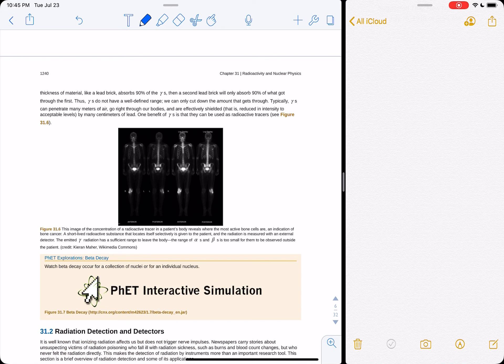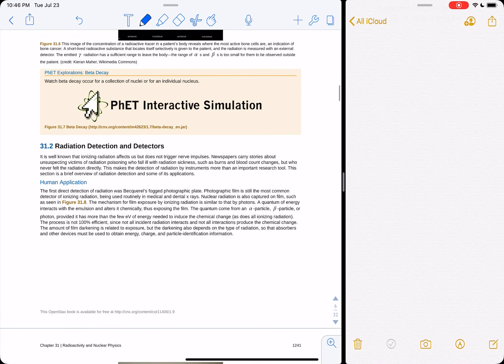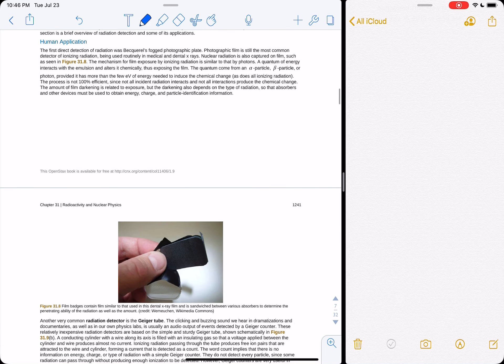And this is why x-rays and gamma rays go through your body, which are just photons, high-energy photons. And we use them to make x-rays. So radiation detection and detectors.